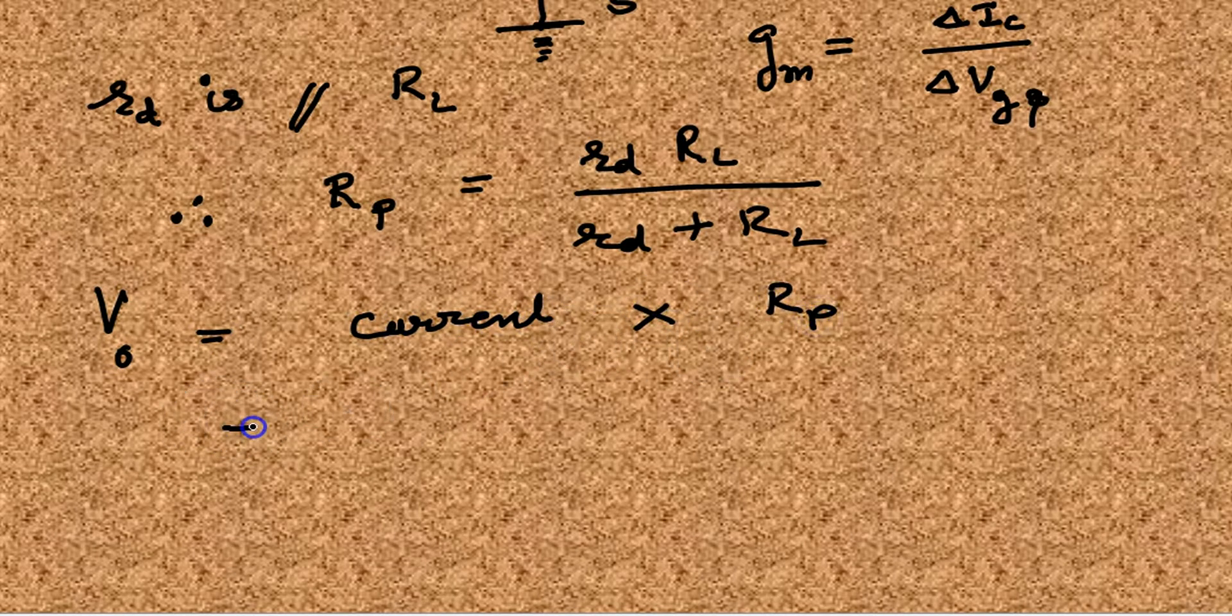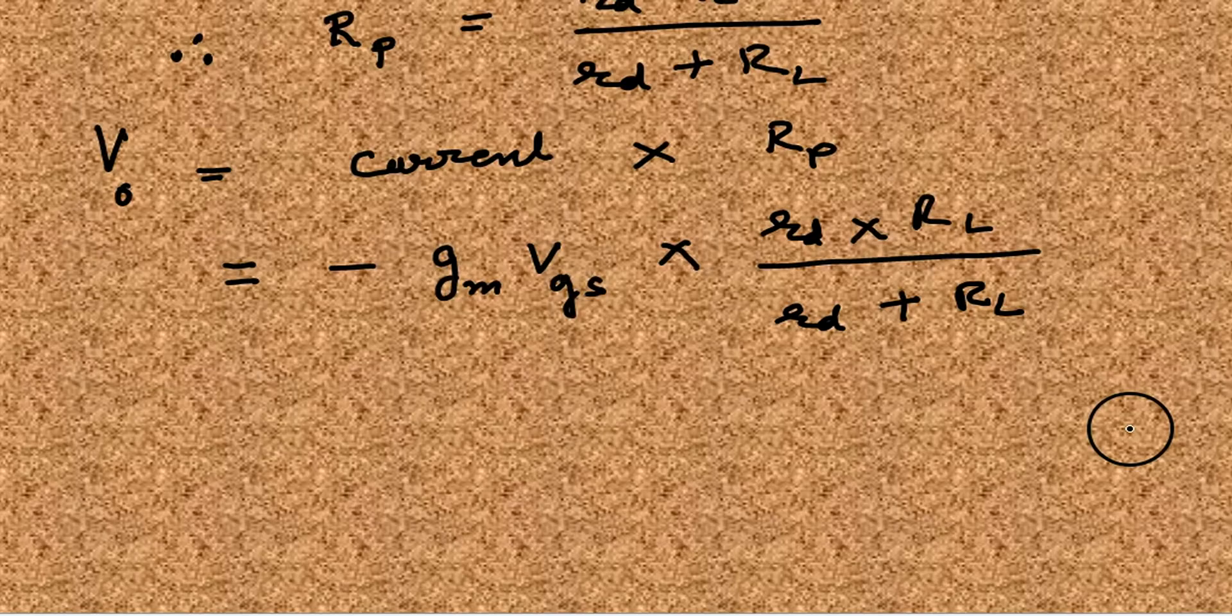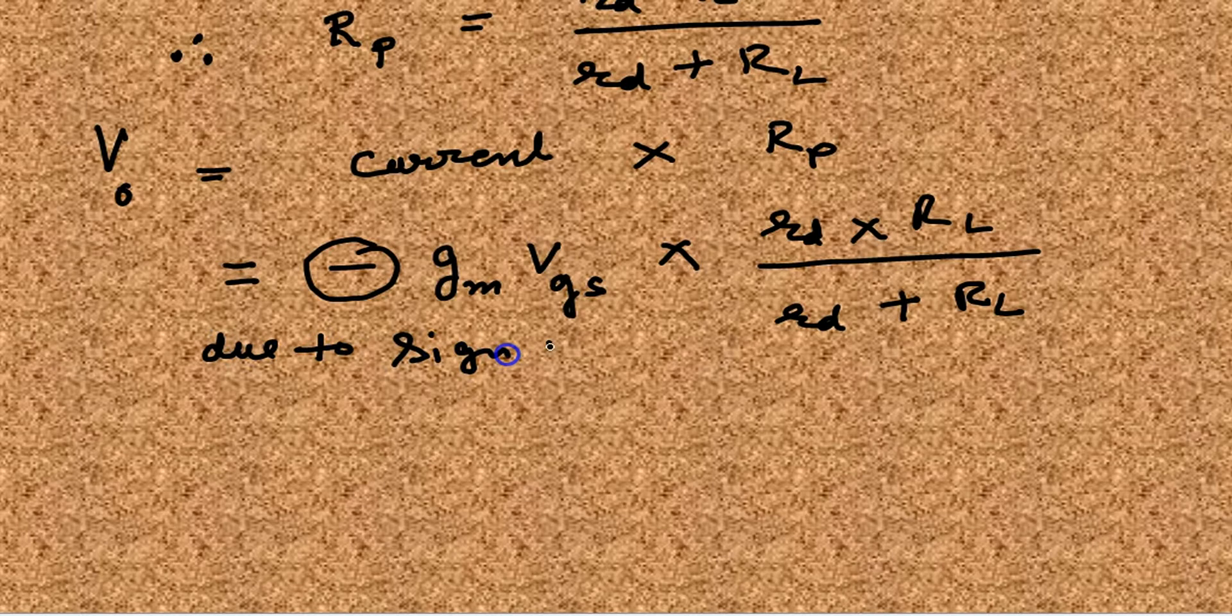Now output voltage is current times resistance. Current is minus GM times VGS times the resistance. The minus sign is by sign convention.